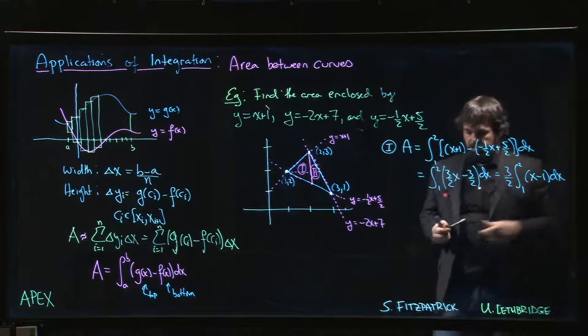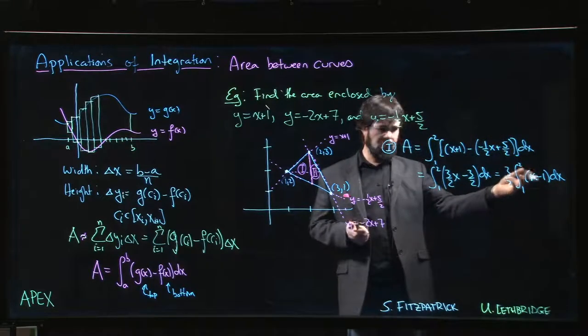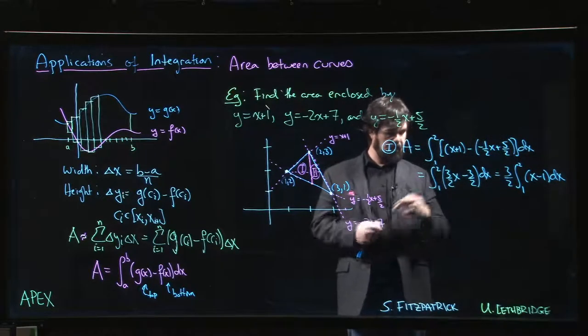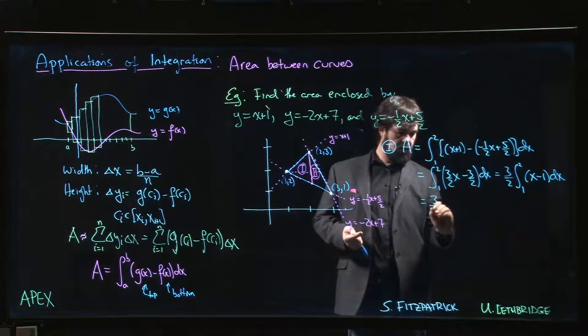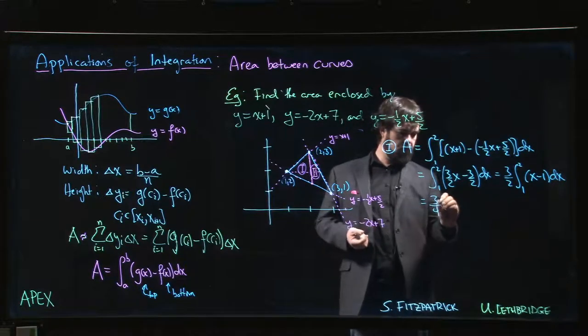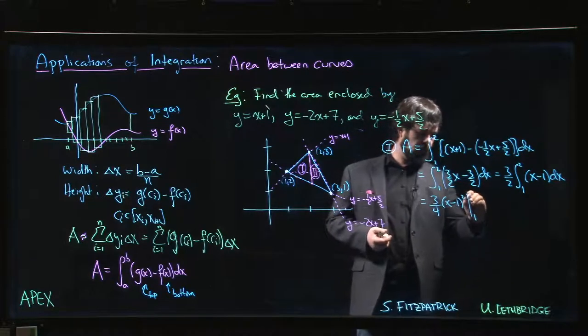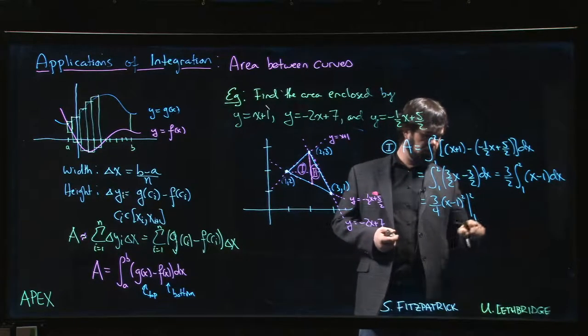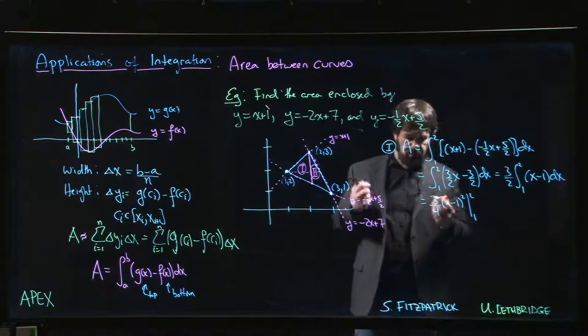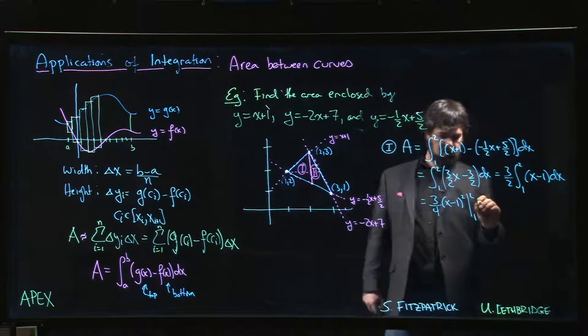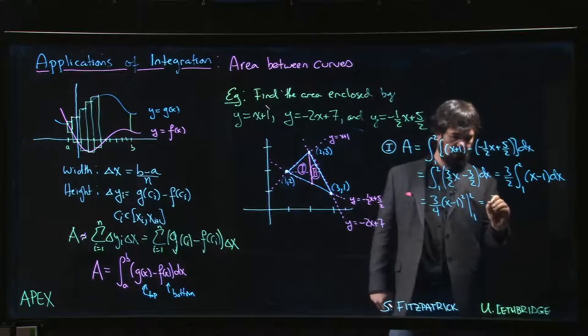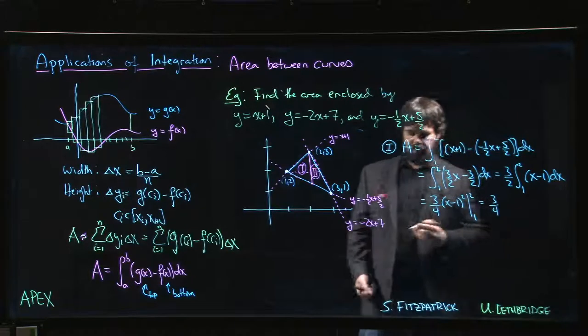Or you could do power rule with a simple substitution and say hey this is going to be 3 over 4 x minus 1 squared. Evaluate from 1 to 2. Realize that the lower limit doesn't contribute because you're gonna get 0. And 2 minus 1 is just 1 so we get 3 quarters for that first region.